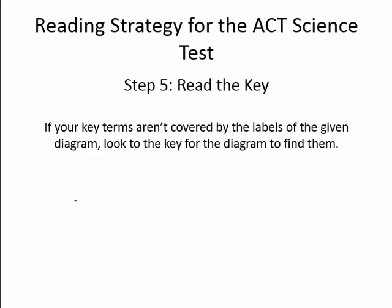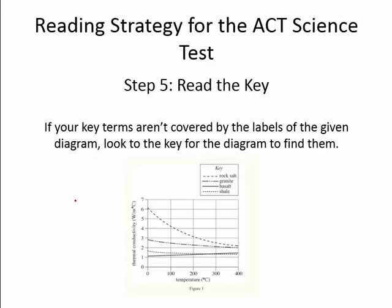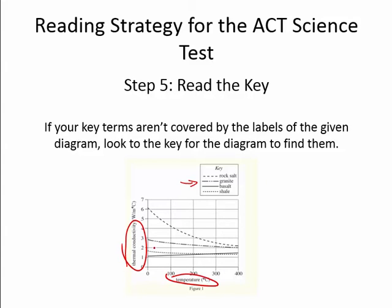That question was pretty straightforward. On a more difficult question, you may find that your key terms aren't covered by the labels of the given diagram. If this is the case, the next step is to read the key of the diagram. Here's an example from another passage on the free ACT science practice section. Let's say the question asks what happens to the thermal conductivity of granite as temperature increases. The key terms are thermal conductivity, temperature, and granite. But we don't see granite directly on our diagram, so we need to look at the key — and there it is. Now we know which line to look at on our graph — the one with the dash and the dots.